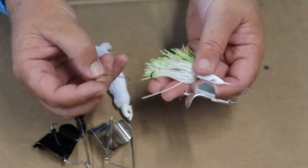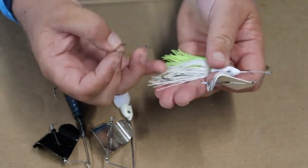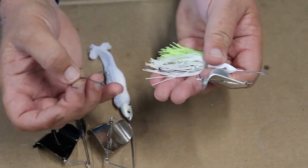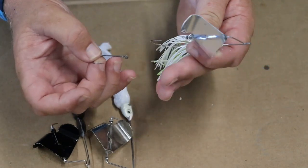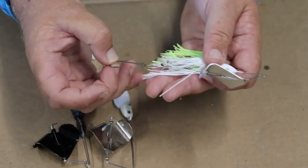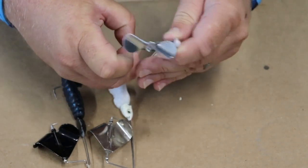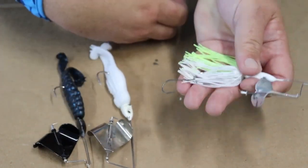So really the only situation that I throw a buzzbait with just the skirt nowadays, and when I say only, I might come up to a situation where skirt makes sense because of color combinations or whatever it may be. But the majority of the time, I'm going to be fishing it only because I need that trailer hook.